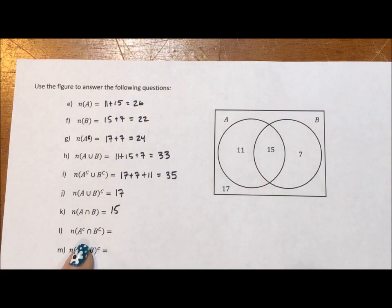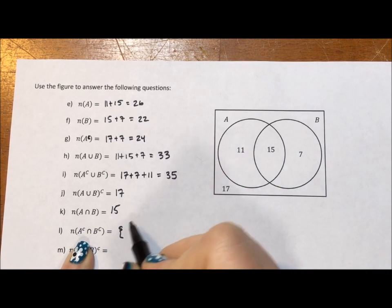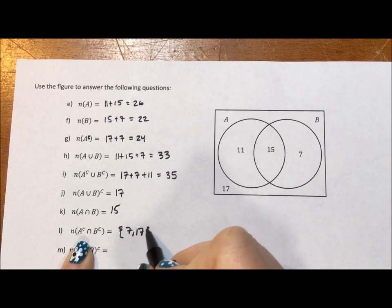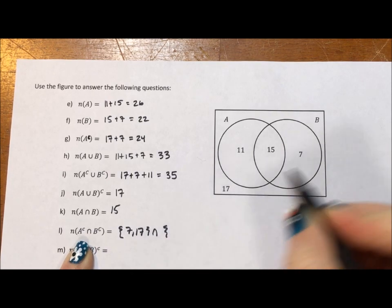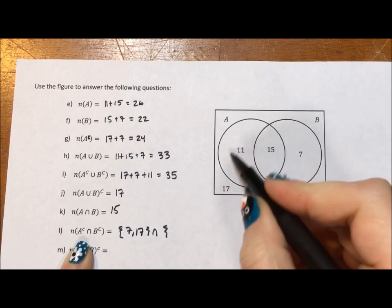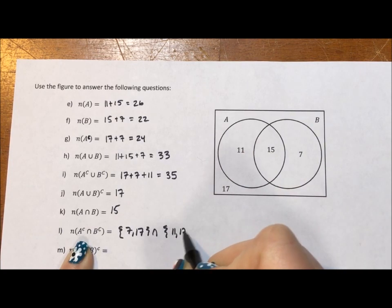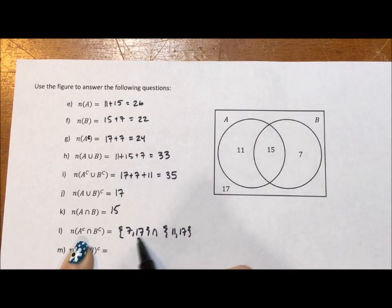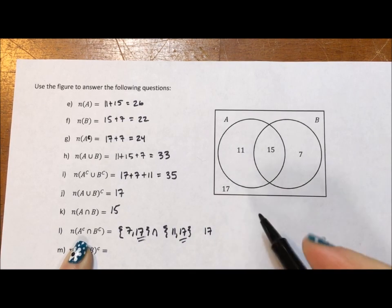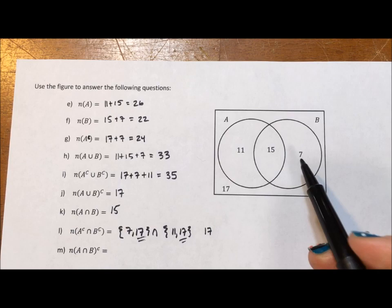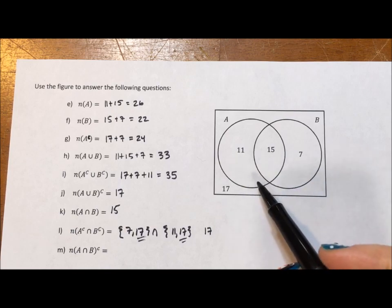All right, so this is saying the complement of A, that's the 7 and the 17, intersection with the complement of B, complement of B is 11 and 17. We're trying to figure out what they have in common. What they have in common is the 17. So 17 is the number of elements that are in the intersection of what isn't A and what isn't B.